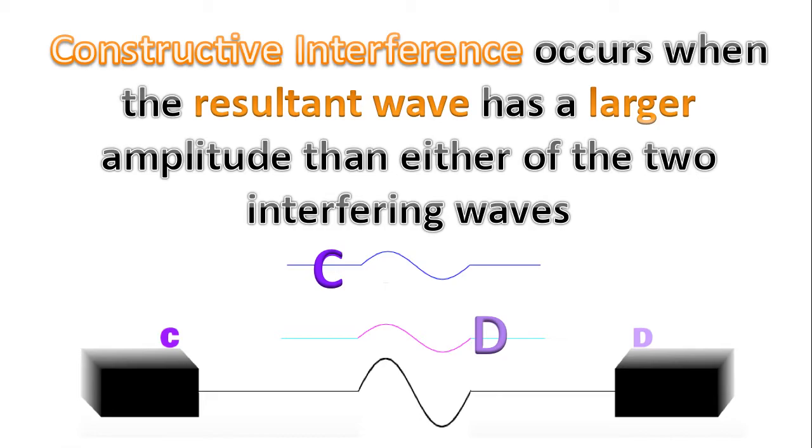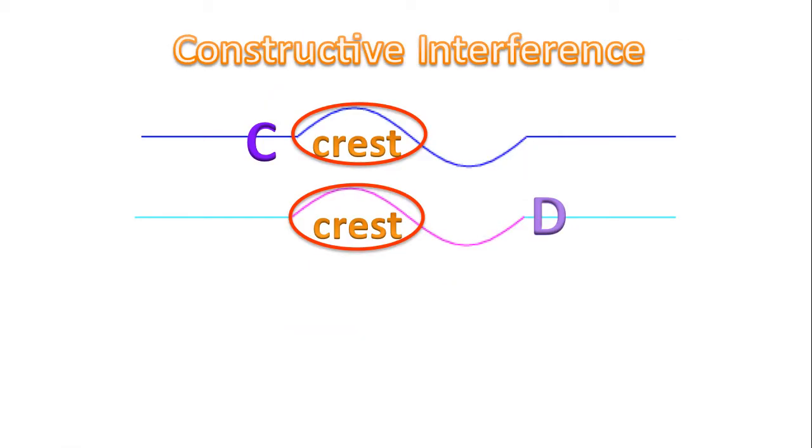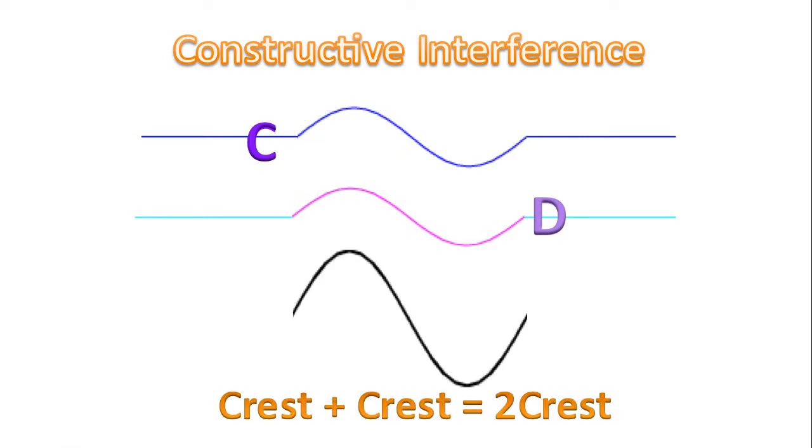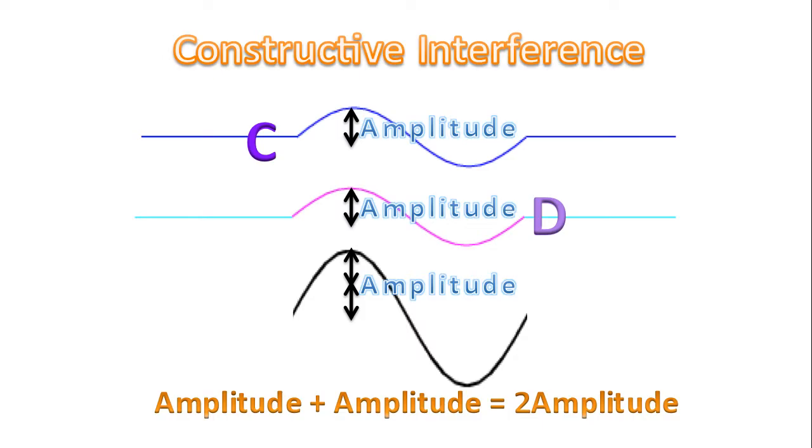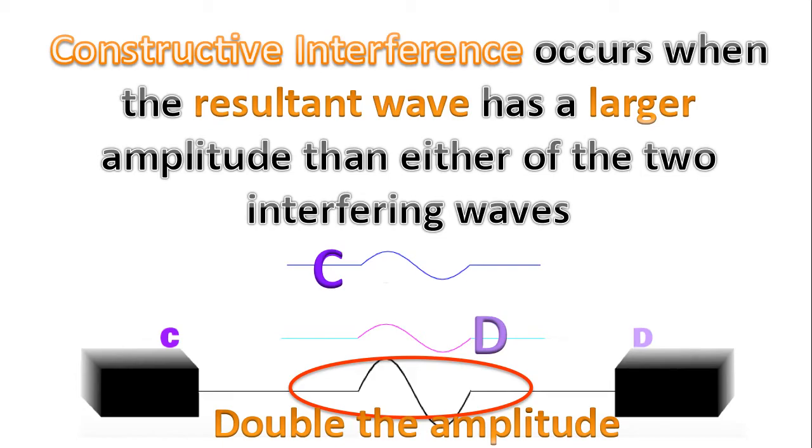Constructive interference occurs when the resultant wave has a larger amplitude than either of the two interfering waves. And we could see that with this picture here. Notice that we're adding two crests together. When you add a crest and a crest, the result is still a crest. How tall is that crest? Well, if the two waves have the same size amplitude, then it's just double the amplitude of the original wave. Twice the size. And that's what we see in this diagram here. If we were to take a ruler and measure that amplitude, that height, it would be double the amplitude of either one of the waves.